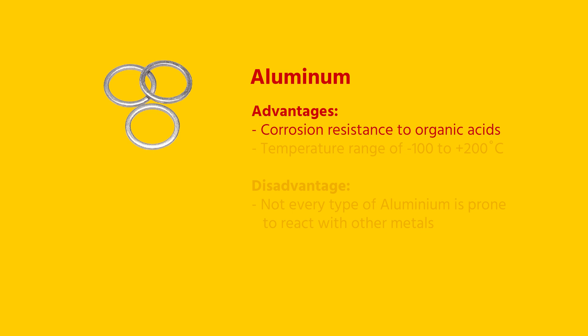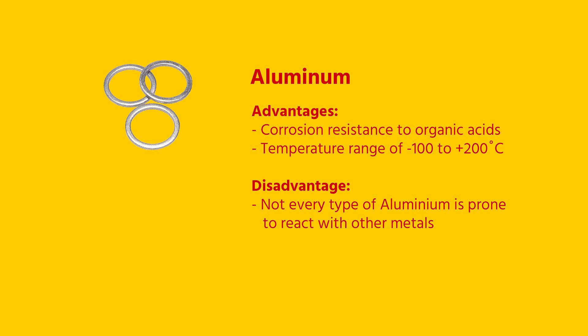Aluminium has good corrosion resistance to organic acids, and can be used at a temperature of minus 100 to plus 200 degrees Celsius. However, not every type of aluminium is prone to react with other metals, which is something to consider when using aluminium gaskets.